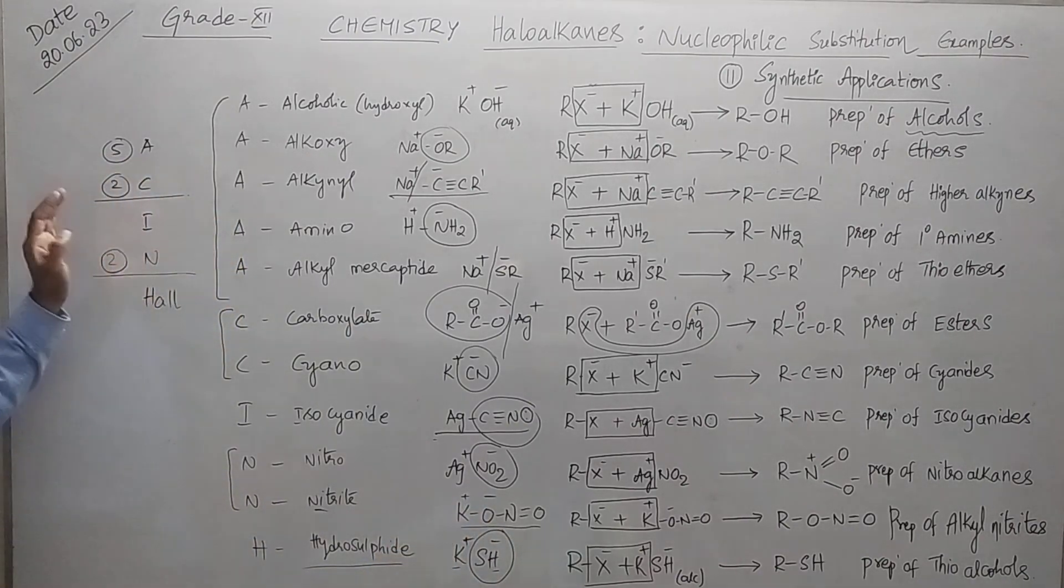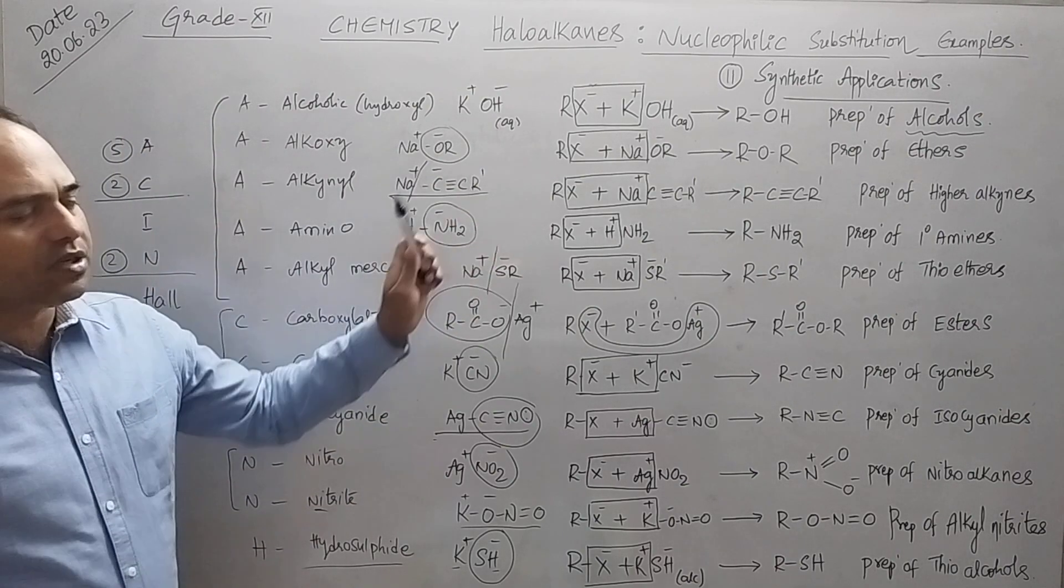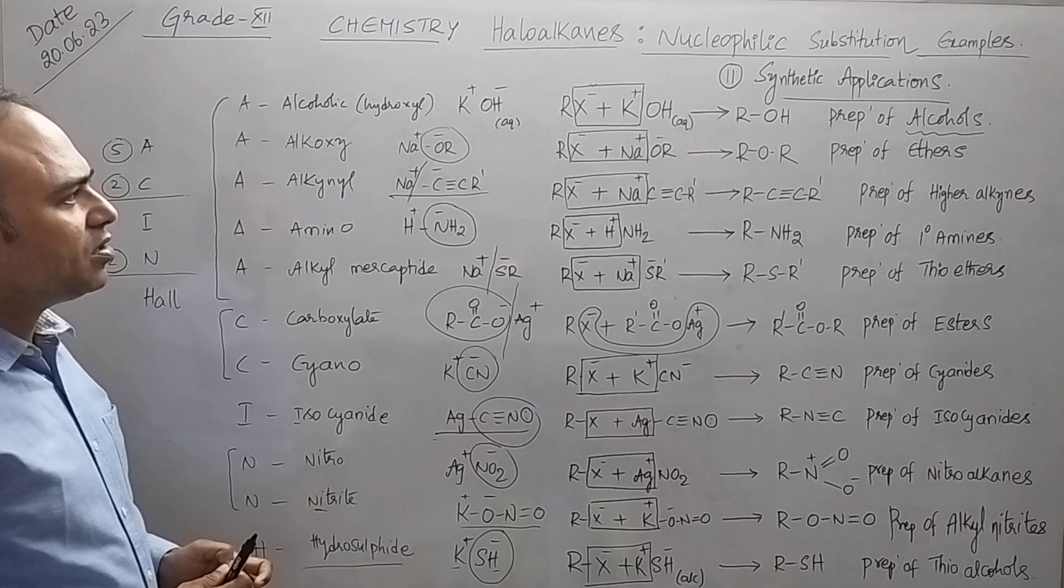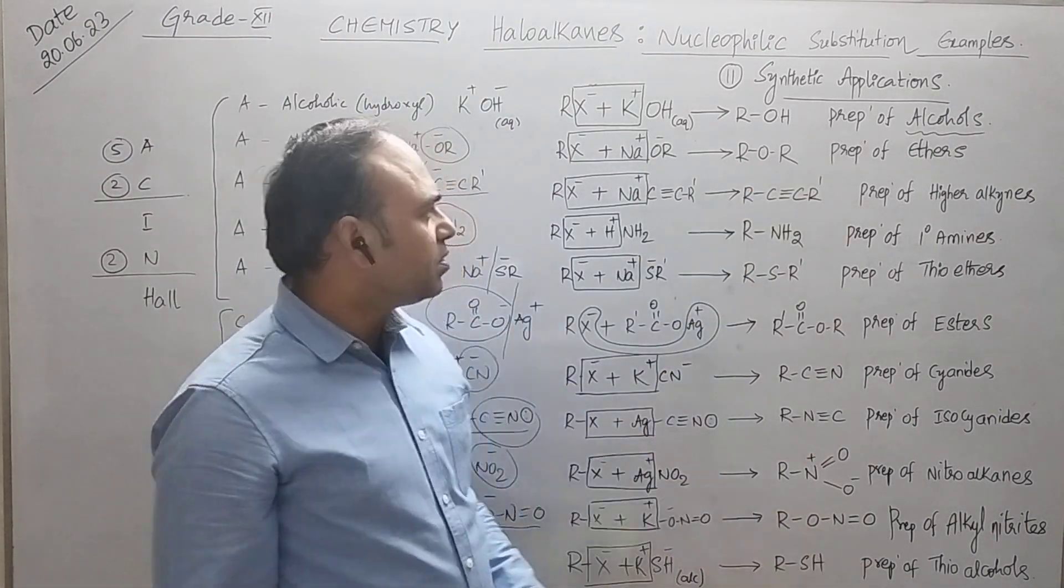And the last one, potassium hydrogen sulfide. From this we get SH minus, so this is the nucleophile. Using this simple mnemonic we can remember all. Now how do you write the general equations?